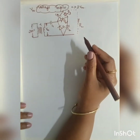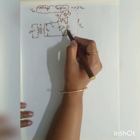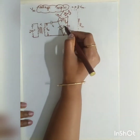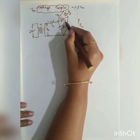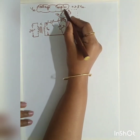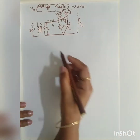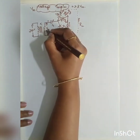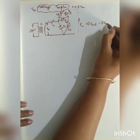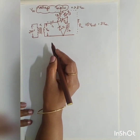In the tripler circuit, D1 will charge C1, D2 will charge C2, and D3 will charge C3. The polarities are marked accordingly — plus-minus for each capacitor. With input Vm, the output V0 is going to be equal to 3Vm.